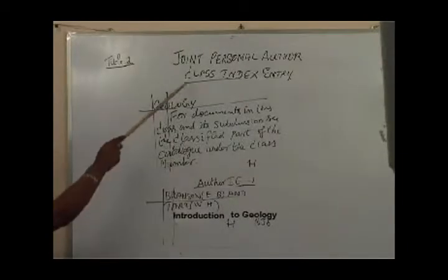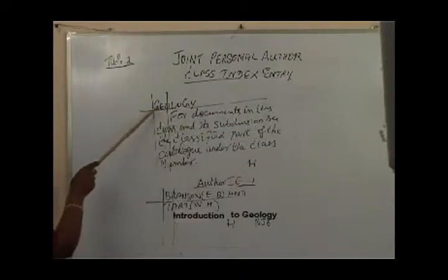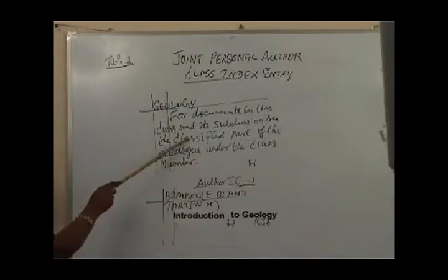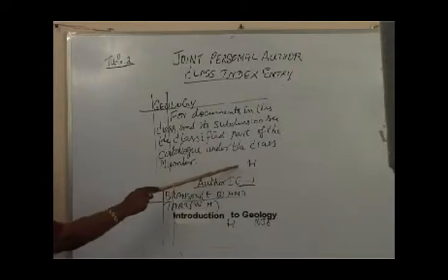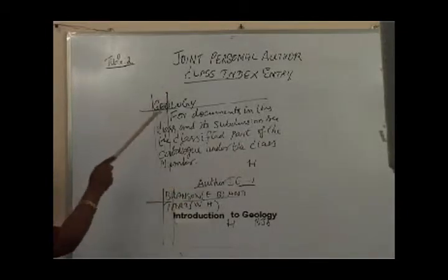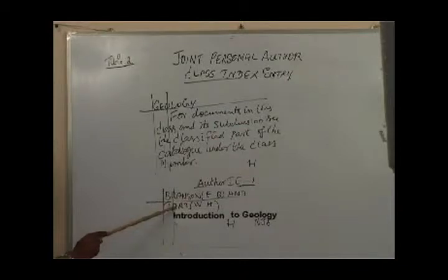From the tracing section, the first one is the class index entry, copied down from the tracing section. The word 'geology' is written in the horizontal line starting from the first vertical. Then comes the directing section, which starts from the second vertical and continuation goes to the first vertical. The last section requires the class number for the word written on the horizontal line.